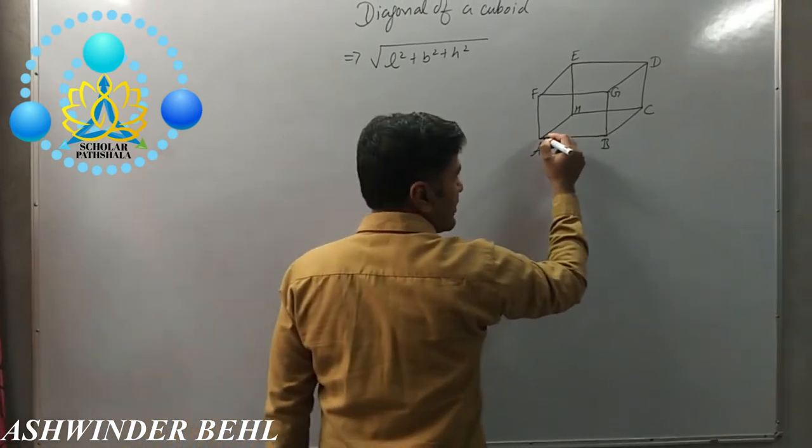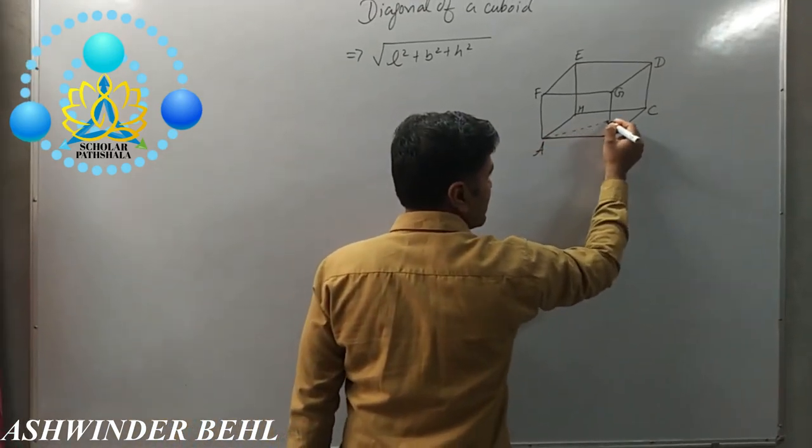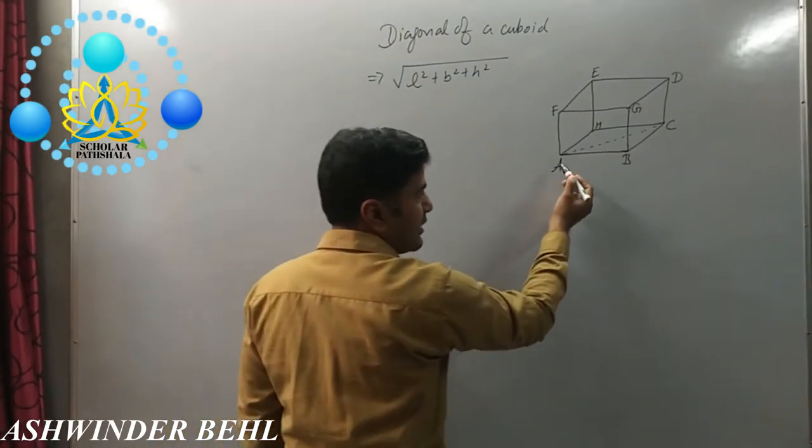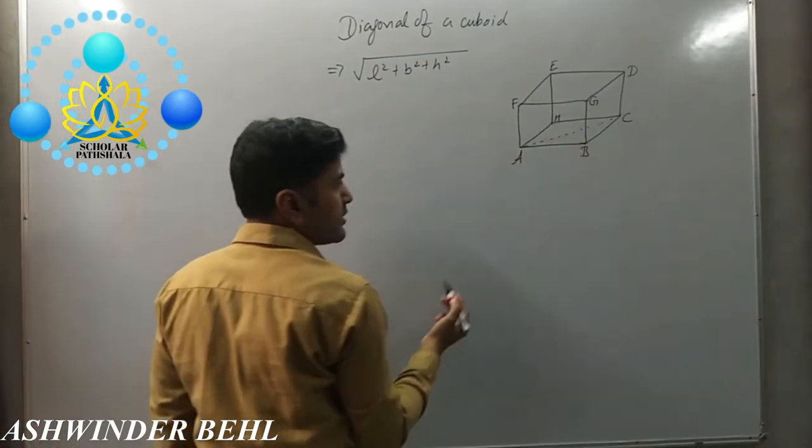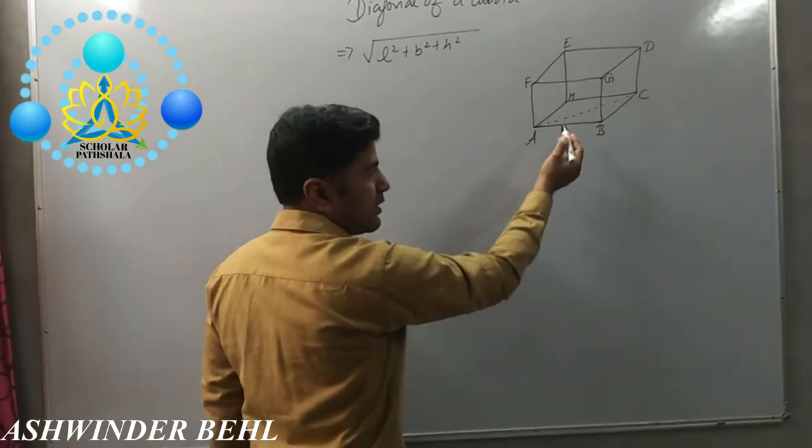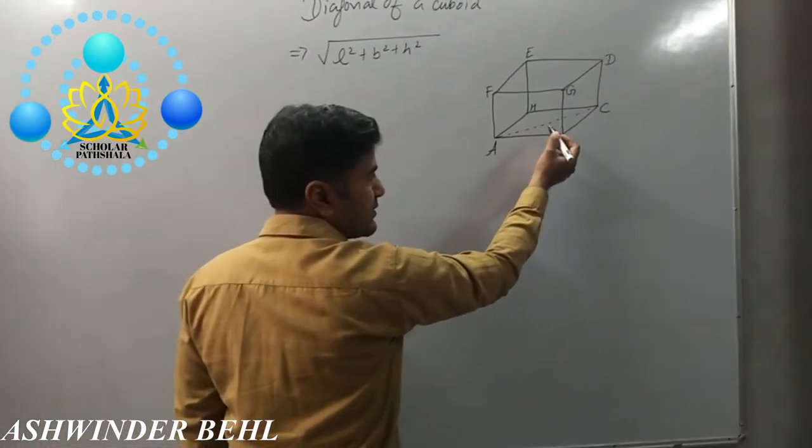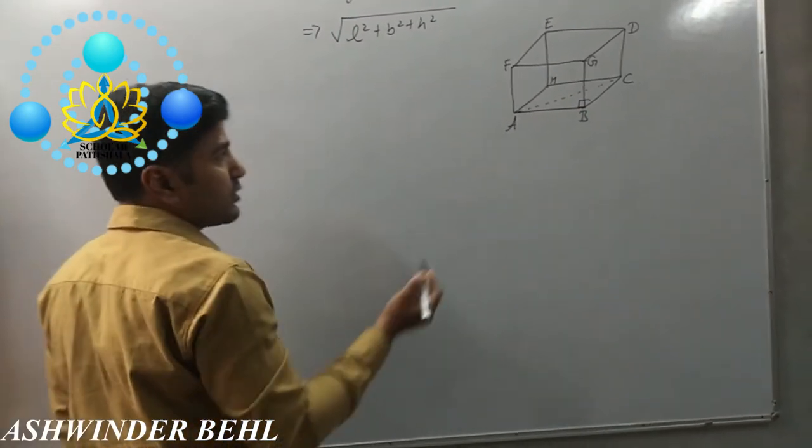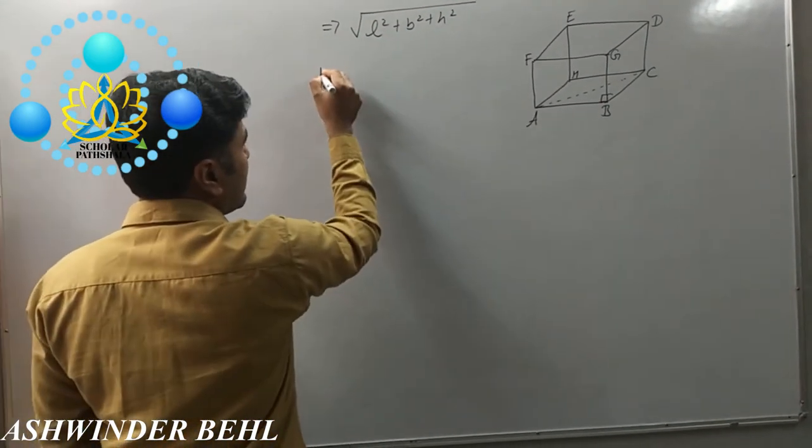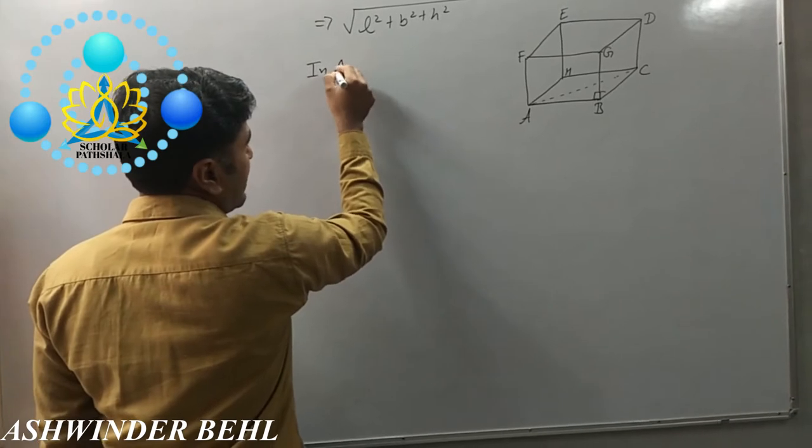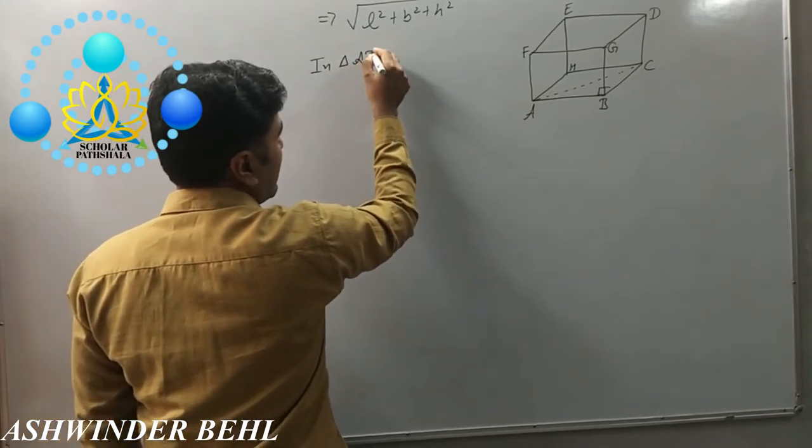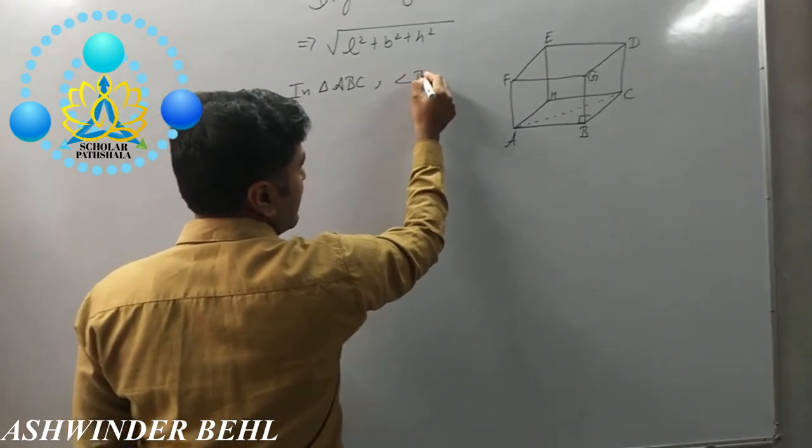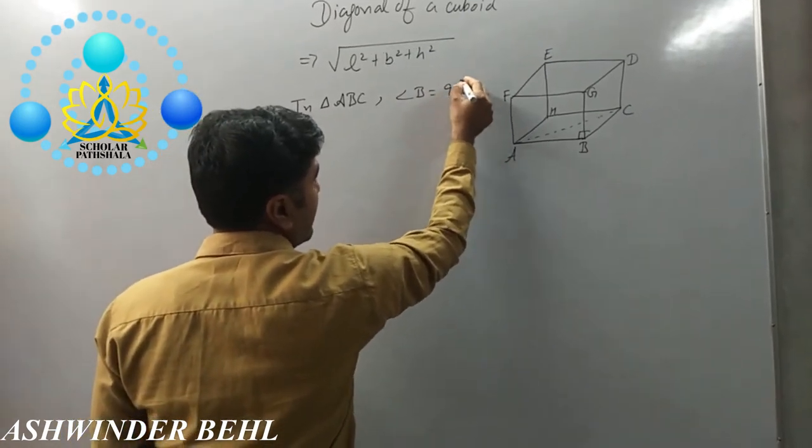If we join A and C, we get triangle ABC. The base of the cuboid is a rectangle, so angle B is 90 degrees. In triangle ABC, angle B equals 90 degrees.